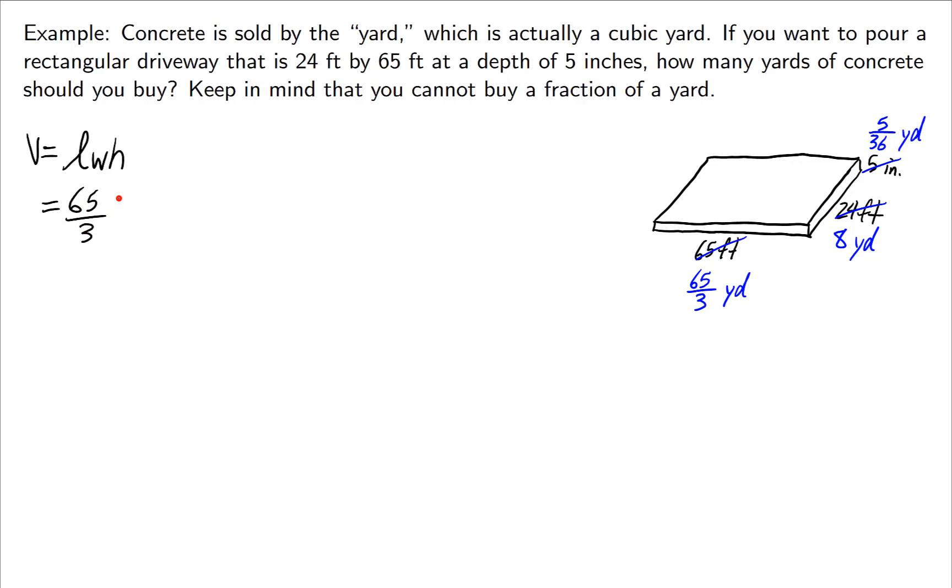When you punch this in your calculator, you can do 65 divided by 3 times 8 times 5 divided by 36. Just kind of the numerators you'll multiply, the denominators you'll divide. And I get approximately 24.07, and I'm going to put it like this, yards.